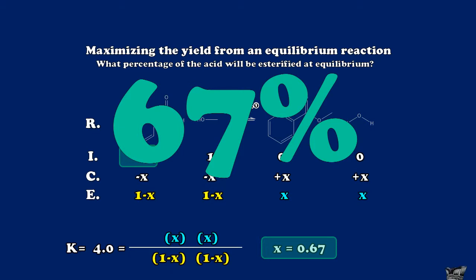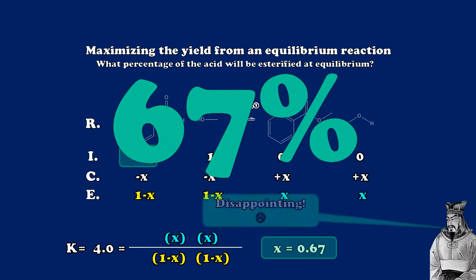67% yield isn't terrible, but by organic synthesis standards it's pretty disappointing — we'd rather get a much higher yield. So is there something we can do to increase the yield we get from this process?